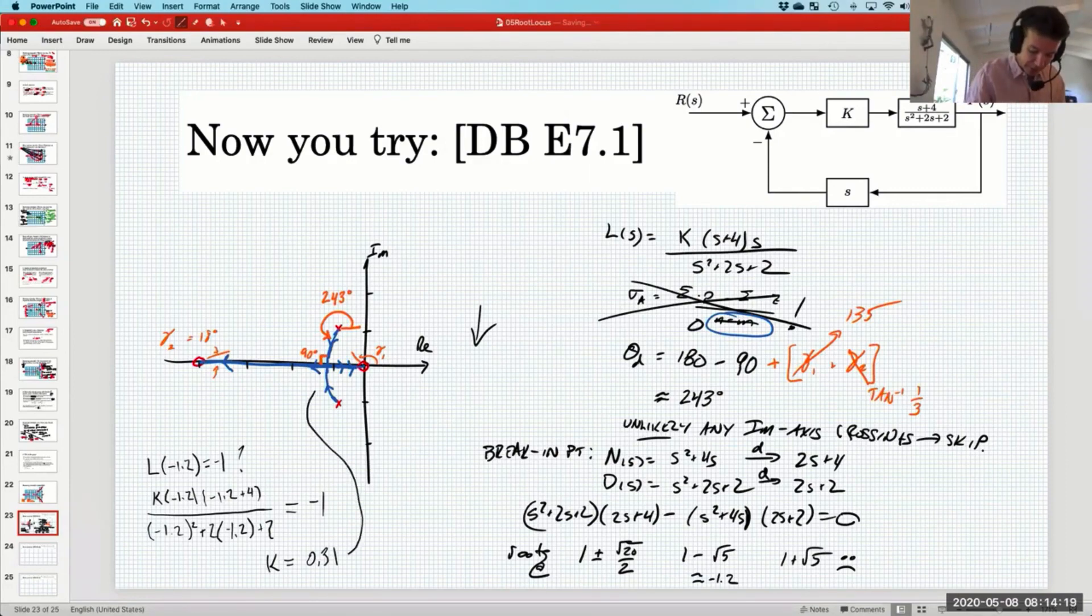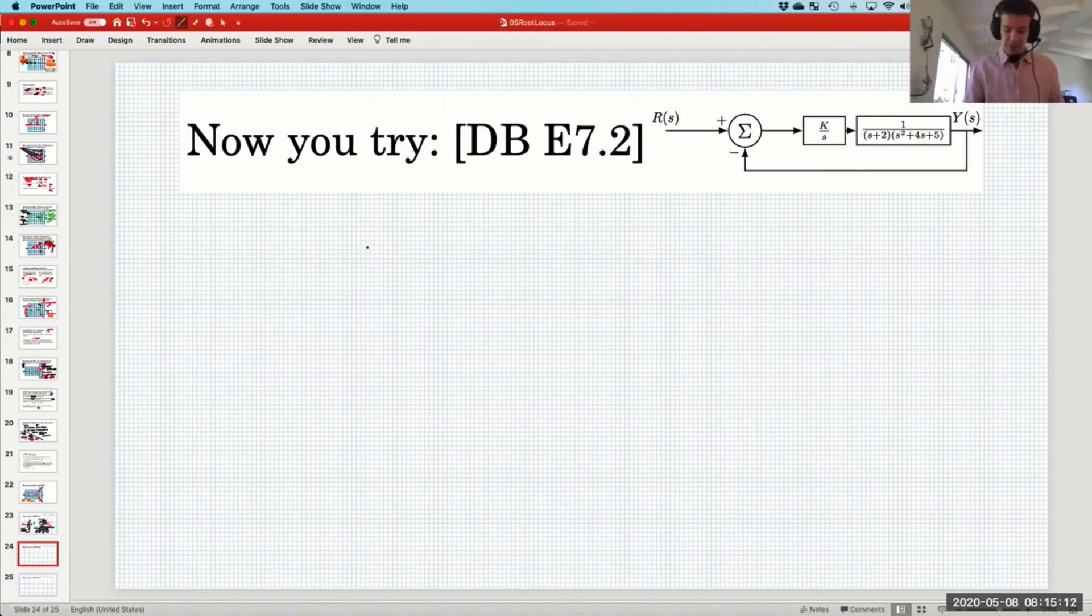So k equals 0.31. When we set k equal to 0.31, the closed loop poles are coincident and they lie at real negative 1.2. This also tells us that any k smaller than 0.31 gives us complex conjugate closed loop poles, and any k larger than 0.31 gives us real and distinct closed loop poles. This is kind of a new way to use the open loop transfer function - to actually get the exact value of k if you know the exact root location. I was going to have you all try this but I think in the interest of time I'm going to go ahead and take over.